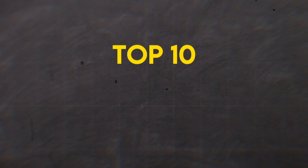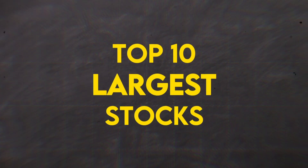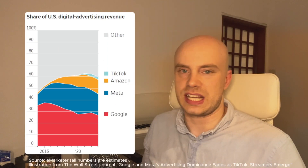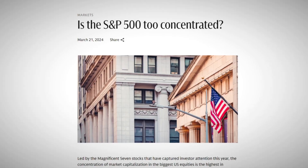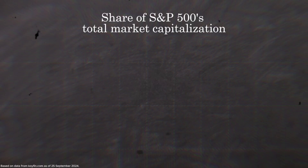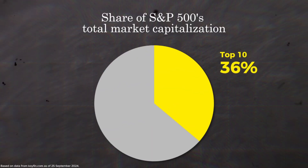So you might ask, why wouldn't I just stick to investing in the top 10 largest stocks? These are among the most profitable companies in the world. Many have dominant positions in their industries, and the largest 10 stocks have grown so large now to represent more than a third of the total market capitalization of the S&P 500.